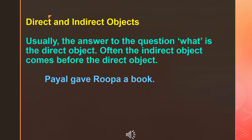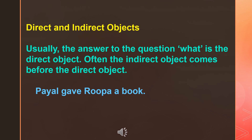Let us see the example: File gave Rupa a book. Here we have two objects of the verb gave. When we ask the question, File gave what? We get the answer a book, which is called the direct object of the verb. Now if we ask whom the book was given to, we get the answer Rupa. The word Rupa is the indirect object of the verb gave. Underline all the important points in your textbook and learn it.